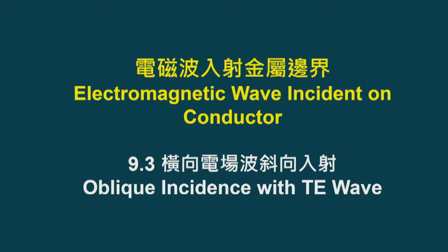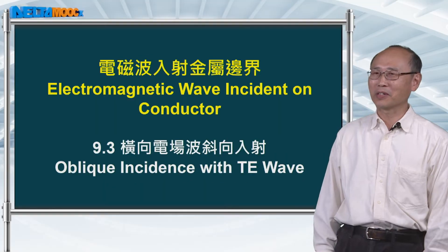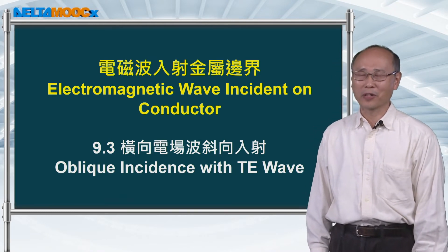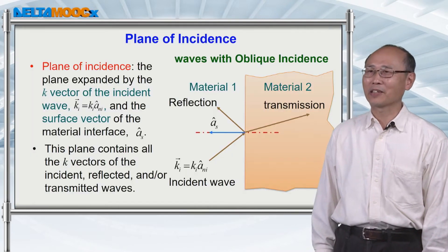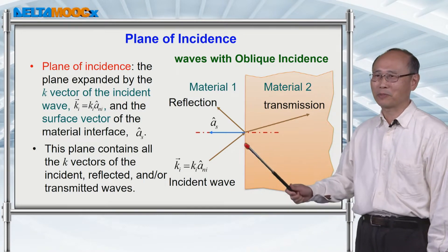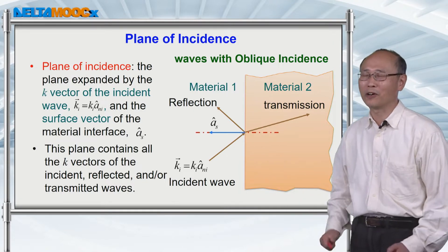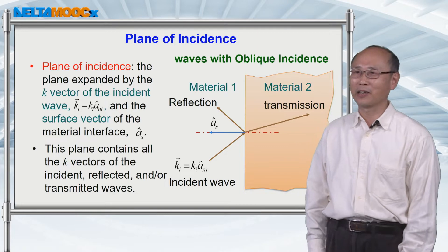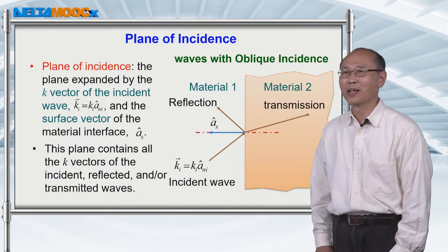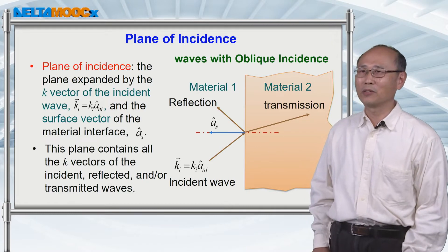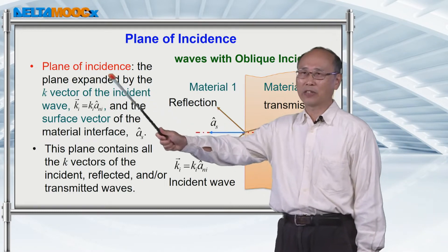In this session, we're going to continue the incidence of a wave onto a conducting boundary, but the setup is going to be more complicated. Imagine that now you send the wave at an angle with respect to the surface normal of this boundary, and we want to see what happens to the electric field and magnetic field. To model the problem, we need to define the plane of incidence.